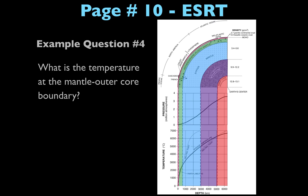Example question four: what is the temperature at the mantle/outer core boundary? Locate where the mantle and outer core meet in the top part of the reference table, bring that point down to the temperature graph, and stop when you intersect the data line. Look over to the y-axis and you'll see that the temperature at this point is about 5,000 degrees Celsius.